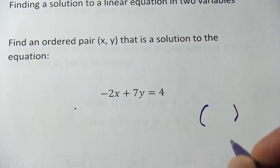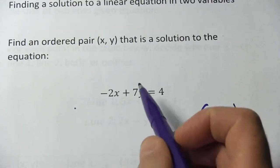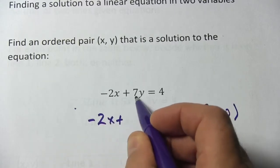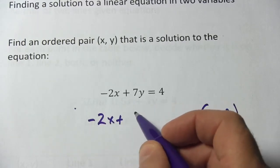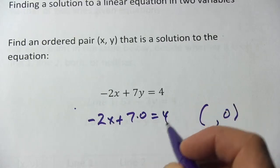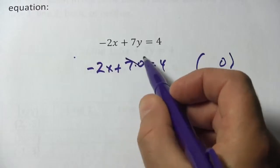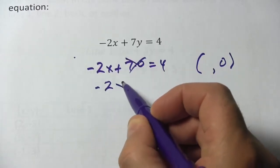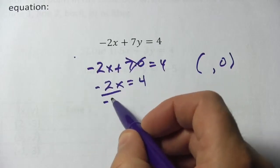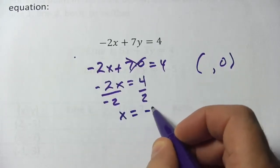So in our ordered pair, I know that it's going to be something, comma, zero. We'll try this. I've got negative two x plus, and instead of seven y, I've got seven times zero equals four. And of course, seven times zero is just zero, so that goes away and we have negative two x equals four. To solve that for x, we just divide by two, and we've got x equals negative two.